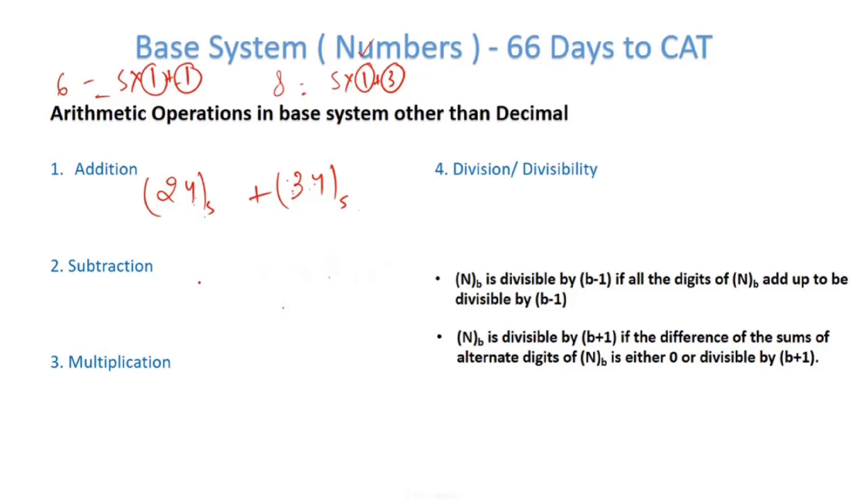Again, if I have to do the subtraction, so 27 in base 9 minus 18 in base 9. I have 7 here. I can't subtract 8, so I'll take a carry. A carry here, unlike decimal system where the carry means 10, here the carry will mean 9. So what is 9 plus 7? 16. 16 minus 8 will give us 8. Now I have only 1 here. So 1 minus 1 is 0.